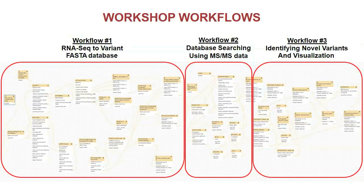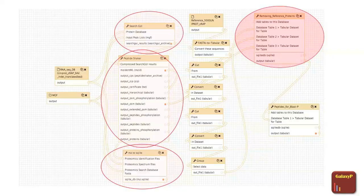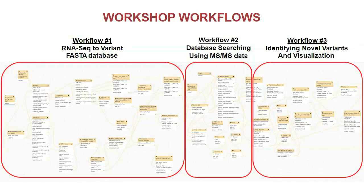That covers the first two workflows: the first generates a protein FASTA file, and the second gives you peptides for BLAST-P analysis and an MZ to SQLite file. The third workflow is the most interesting. While the second workflow can be done with any other software given an MGF file and an RNA-seq generated protein FASTA, our Galaxy workflows hopefully help you get it done more easily on your datasets.